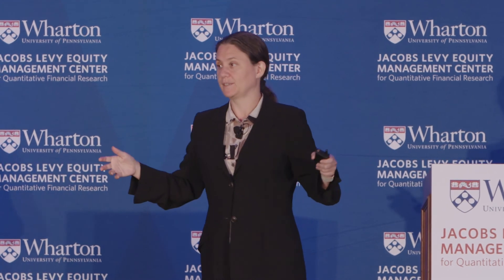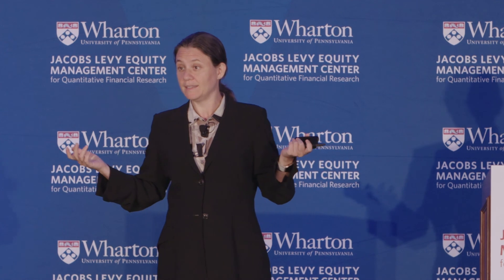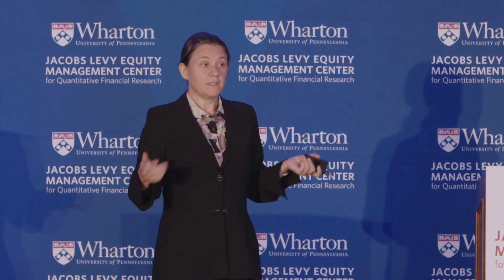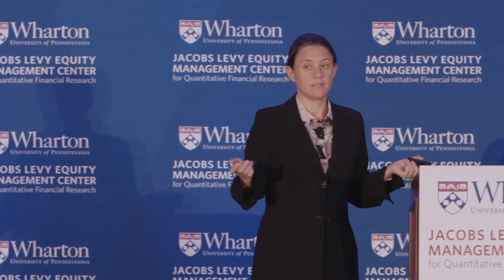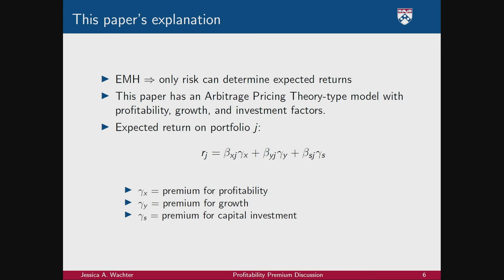So here's this paper's explanation. This paper operates within the efficient markets hypothesis, and under the EMH anything that moves expected returns has to be about risk. In a very broad sense, this paper comes from an arbitrage pricing theory framework. What's neat is that it has a model of the firm from very first principles that derives betas in an APT-type framework — rather than assuming betas, they're derived. The factors are assumed to be aggregate profitability shocks, and the paper derives the portfolio that's the perfect hedge for that macro factor.